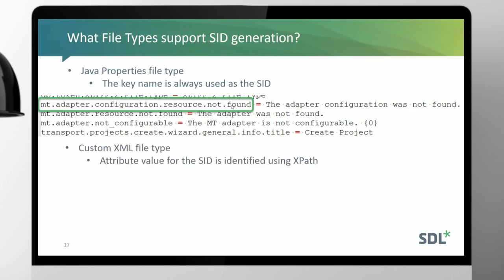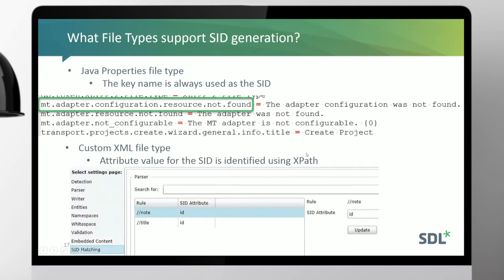Then we have the custom XML file type, which is a little more complex. For the Java properties file type in World Server, there is no UI for configuring segment ID generation — it's always on, always generated whether you choose to use it or not. But because the structure is simply key equals value, there's no need for a UI. For custom XML file type, you use XPath notation to identify the ID value of the note and title elements defined in your parser rules, used during preprocessing to extract the particular value dynamically from the source file. It's stored in translation memory and then matched against the subsequent version of that file, which is very good for mid-project updates.